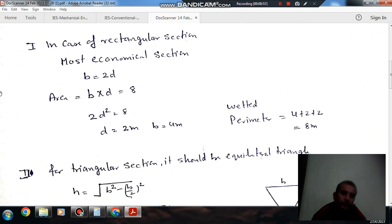Now when we consider rectangular section, the most economical section is when width B equals 2 times depth D. Area of flow is B times D. If you put B equal to 2D, then D will be 2 m and B will be 4 m.